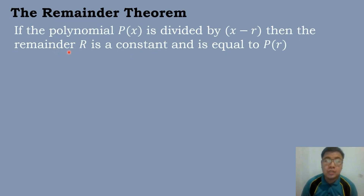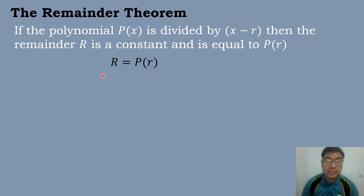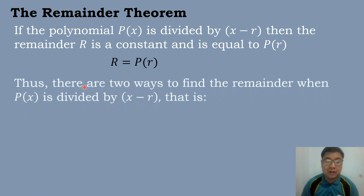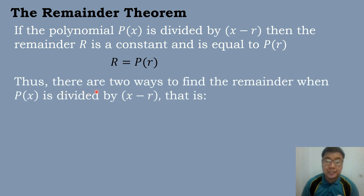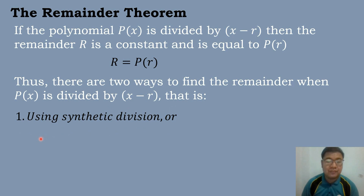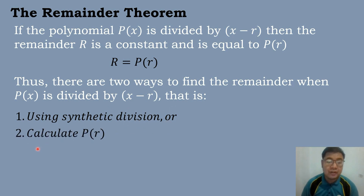So let's have first the Remainder Theorem. If the polynomial P of X is divided by X minus R, then the remainder R is a constant and is equal to P of R. So the remainder is equal to P of R. Thus, there are two ways to find the remainder when P of X is divided by X minus R: the first one using synthetic division, or the second one is to calculate the value of P of R.